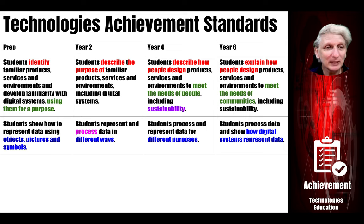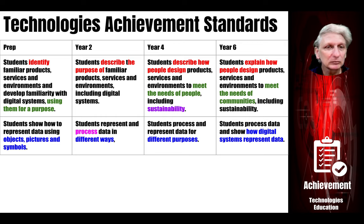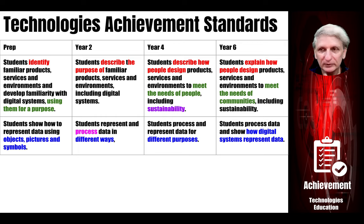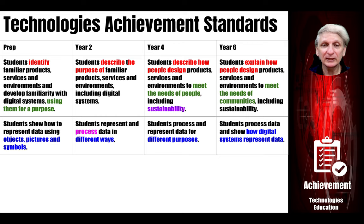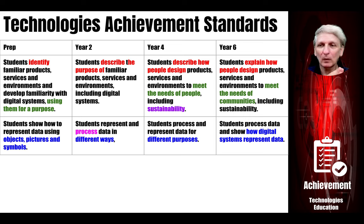Looking at the overall achievement standards, in prep students are focused on identifying familiar products, services, and environments and using those things for a purpose. By the end of year two, students should be able to describe the purpose of these familiar products, services, and environments. By year four, they need to describe how people design these products and services. And by the end of year six, they need to explain how people design these to meet the needs of communities. There is a continuum, slowly getting more complex as students progress through primary school.